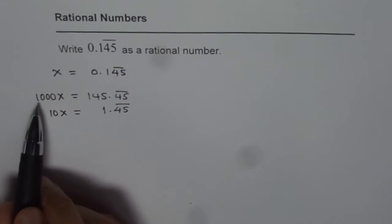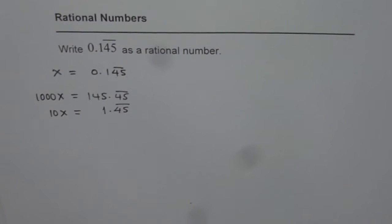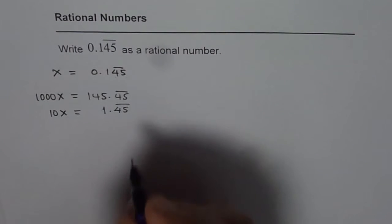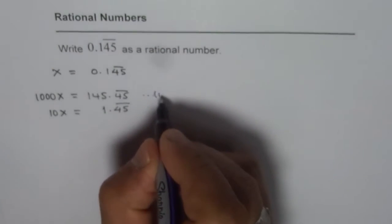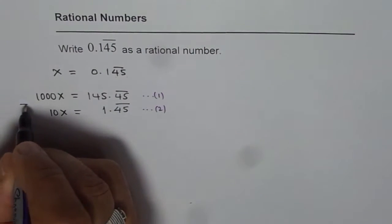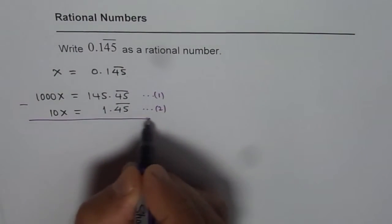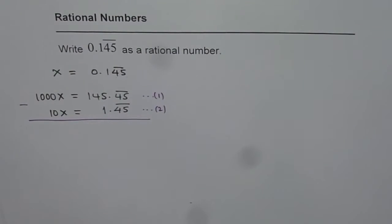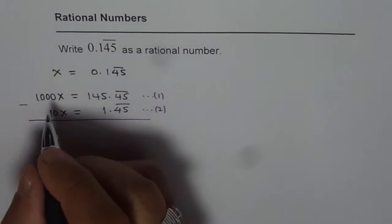Now we will take away, we will do 1000 minus 10x. So we have this as equation 1 and this is our equation 2. So we will take away 10x from 1000x. Let us see what we get after that.